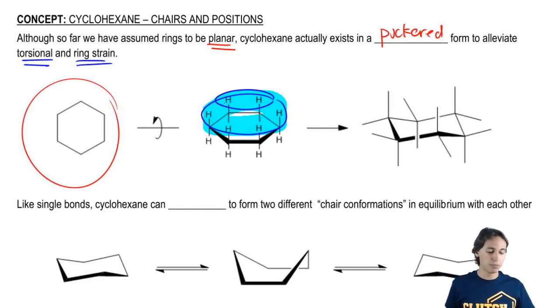It would also have a lot of ring strain because these bond angles would be 120 degrees versus 109.5 degrees, where it wants to be.